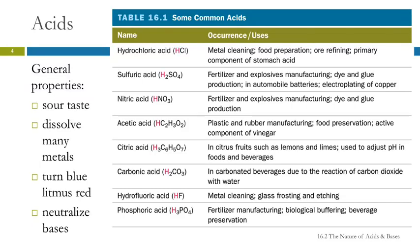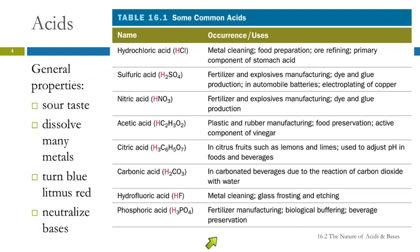So we need to talk about the nature of acids and bases. Some general properties over here on the left. Acids taste sour. They will dissolve many metals. They'll turn blue litmus paper red. Litmus is actually an indicator — litmus paper is just a paper that has litmus on it. And acids will neutralize bases.